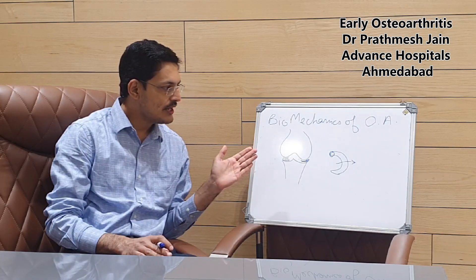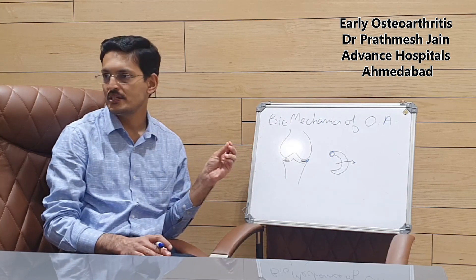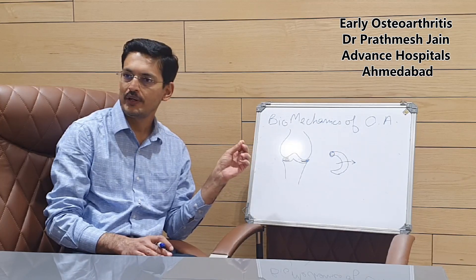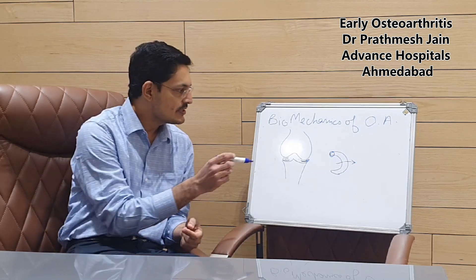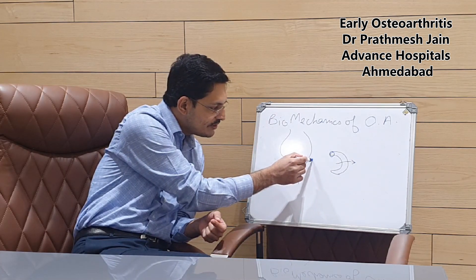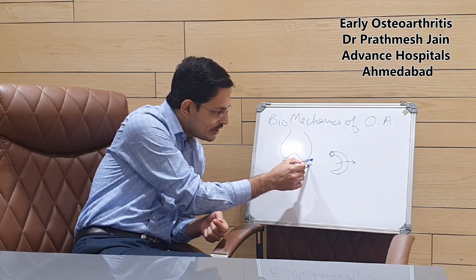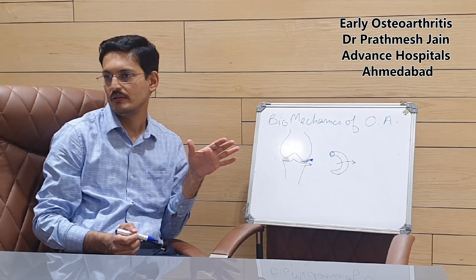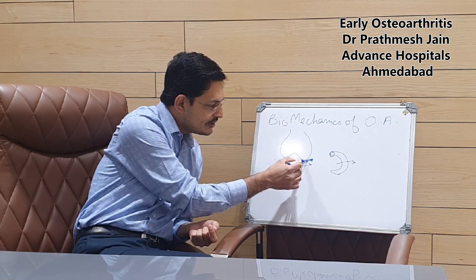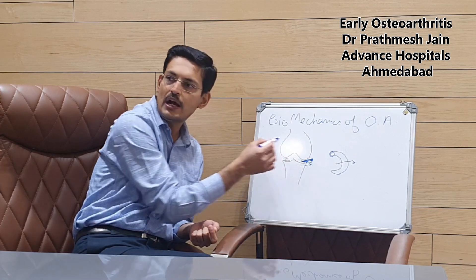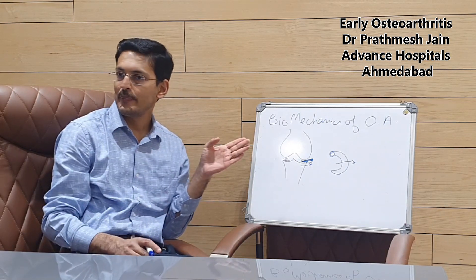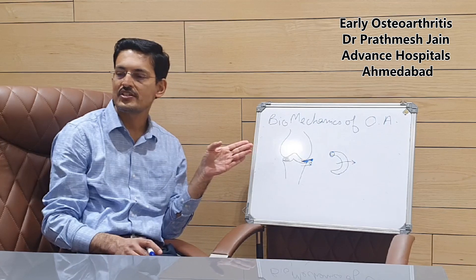We now know that meniscus tear — either in the substance or as a root tear — is a predisposing factor for osteoarthritis. With a root injury, the meniscus extrudes on the medial side and becomes dysfunctional. This causes increased varus deformity because the meniscus is a soft tissue entrapped between the joint — if it extrudes out, the patient develops a little varus deformity without any bony change. A meniscus extrusion can cause varus deformity without bony involvement.